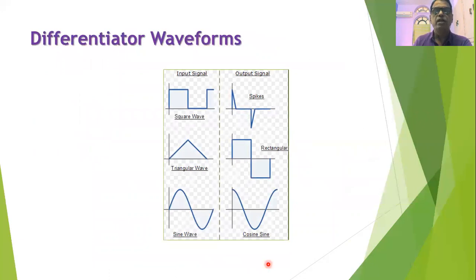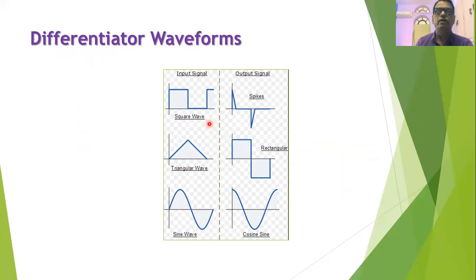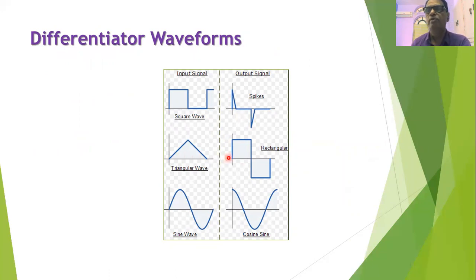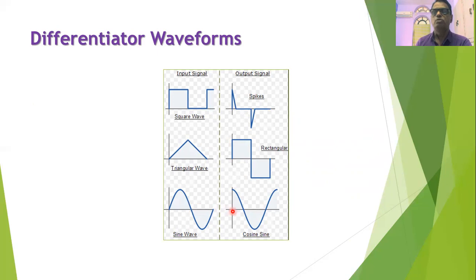Different forms of signals can be applied to the differentiator circuit. If we apply a square wave at the input, then at the output of the differentiator we will get spikes. If we apply a triangular wave at the input, then at the output we will get a rectangular wave. If we apply a sine wave to the input of the differentiator, then at the output we will get a cosine wave.